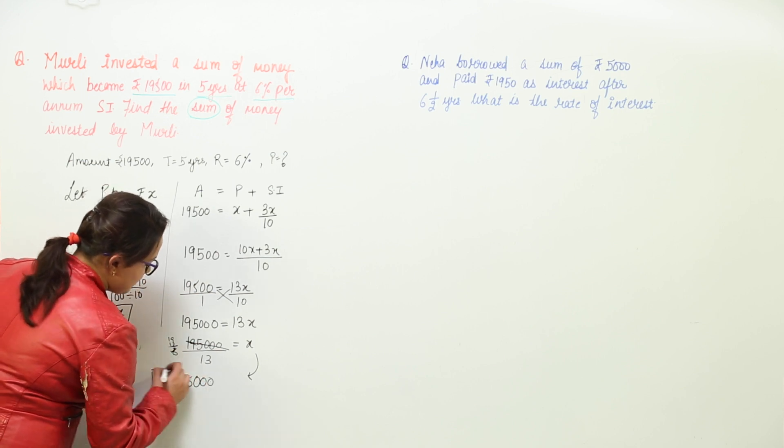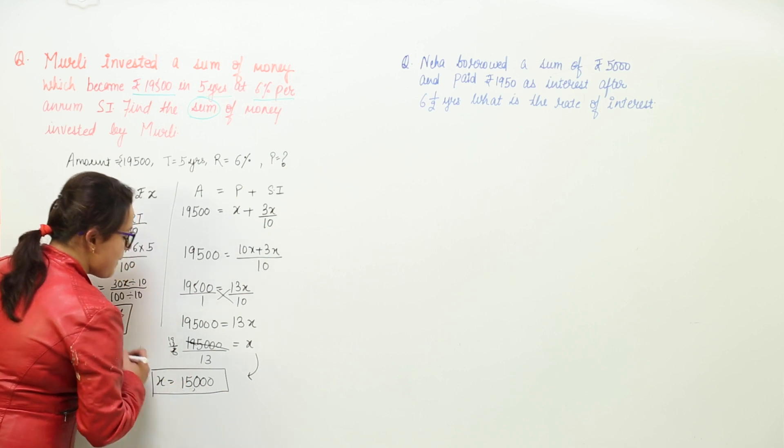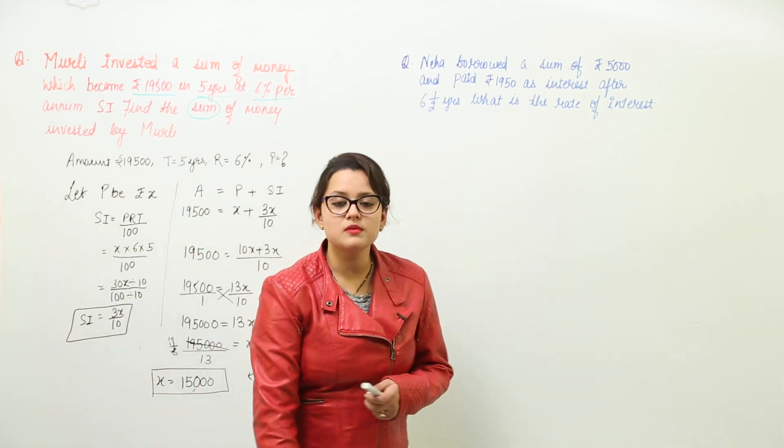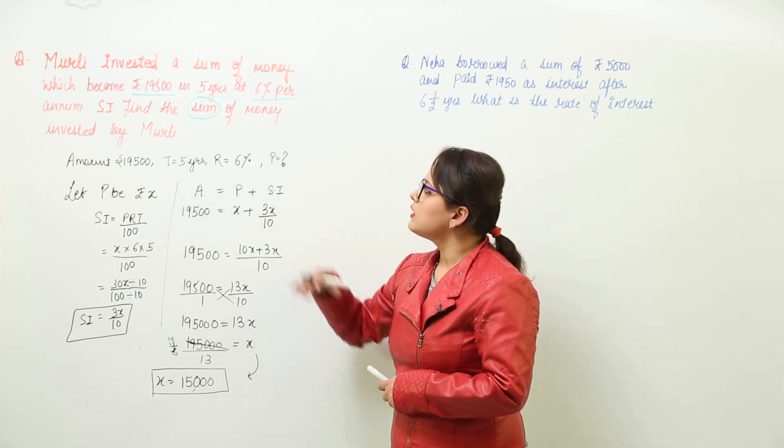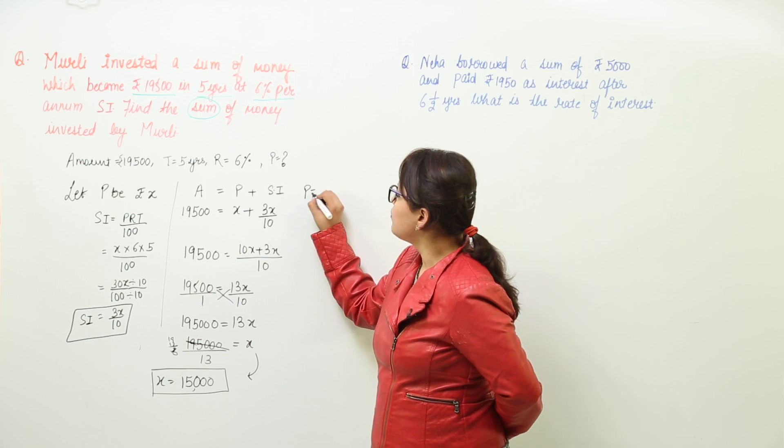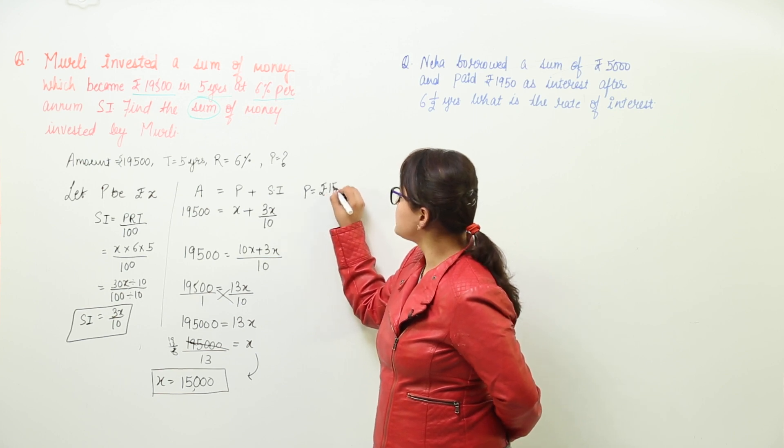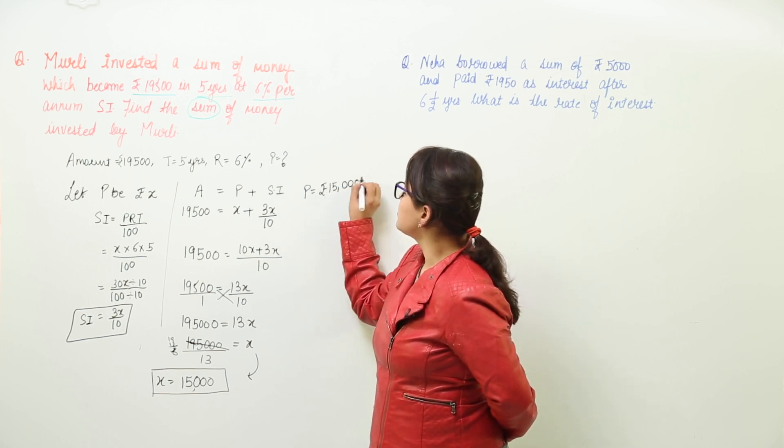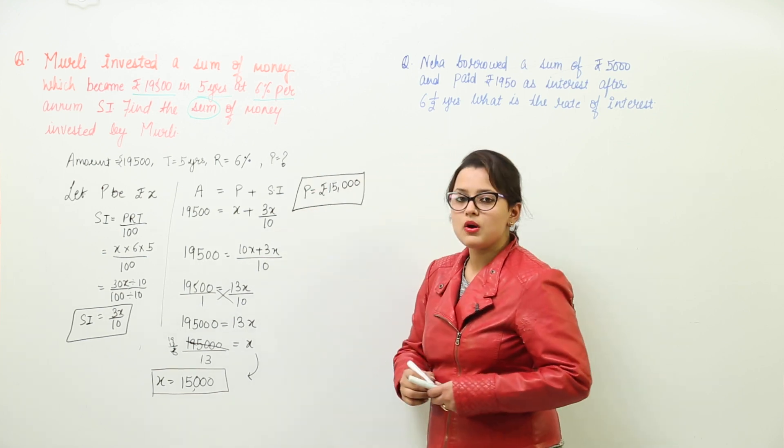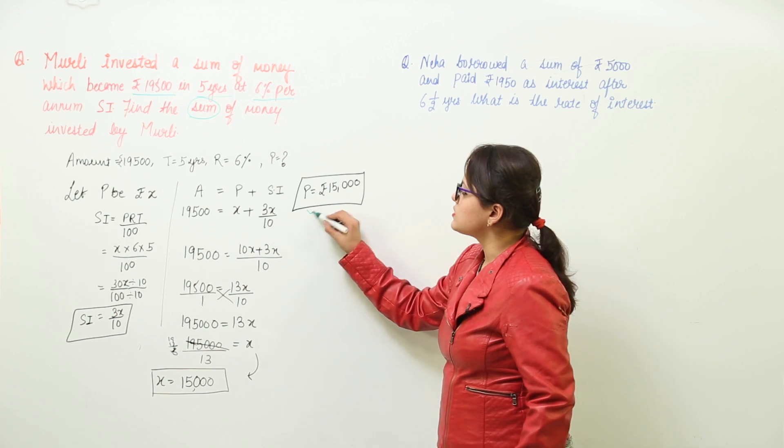That means the value of x comes out to be 15,000 but as we know x was assumed to be my principal. So what is the principle invested by Murali? The principle invested by Murali will be equal to rupees 15,000. So that is how you can calculate the principle that is to be found. That was about the first question.